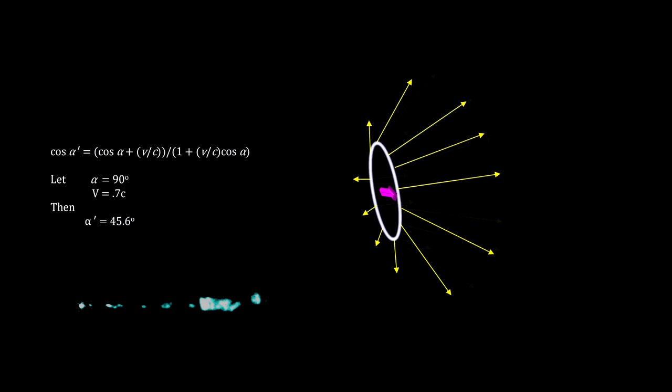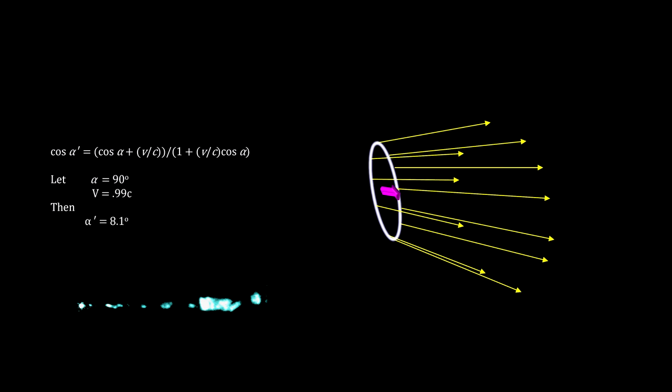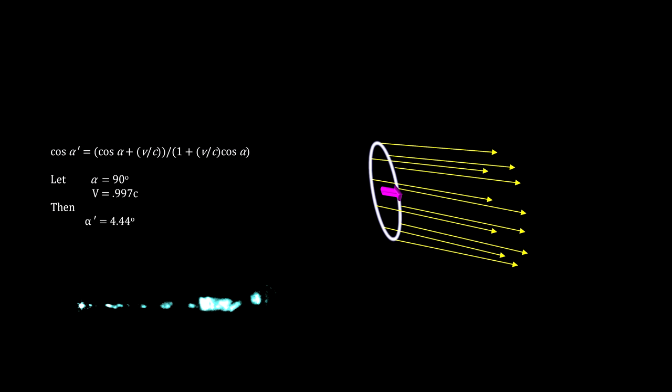For trillions of continually emitting particles, like the electrons in the M87 jet, this beaming effect increases the photon density in the direction of the movement, causing the jet's luminosity to increase. This explains why the jet looks so bright.